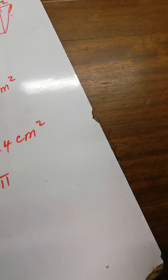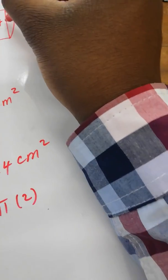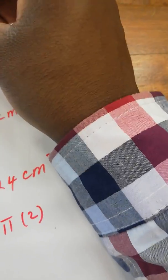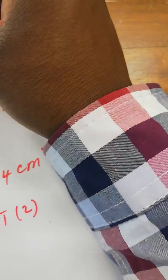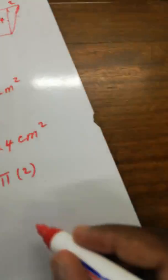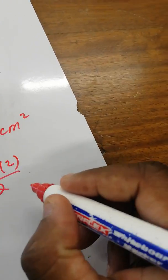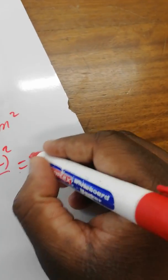The diameter here is four, which means the radius is two. So it's pi times two squared, divided by two, which gives us two pi centimeters squared.